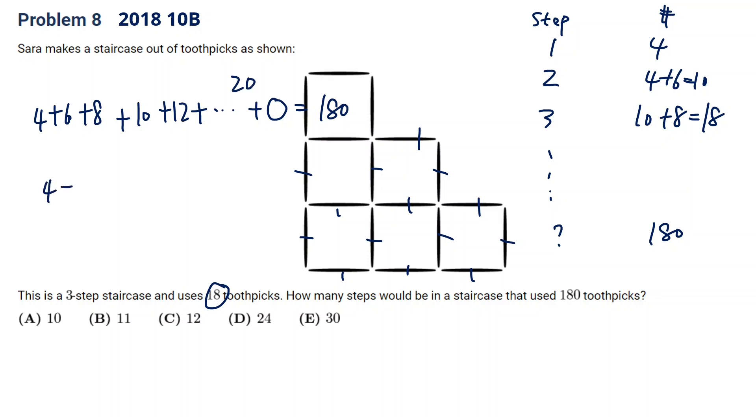So we're going to do 4 plus 20 times from 4 to 20. There are 20 minus 4 divided by 2 plus 1, which is 9 numbers. So times 9 divided by 2, which will give us 12 times 9, which is 108.